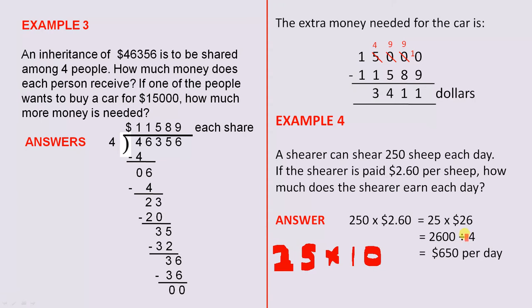But we have to divide by 4, because 25 times 4 is 100. We've actually multiplied by a number which is 4 times larger than this number. That's why I divide by 4. So 2,600 divided by 4, if we halve it, we get 1,300. Halve it again, we get $650.